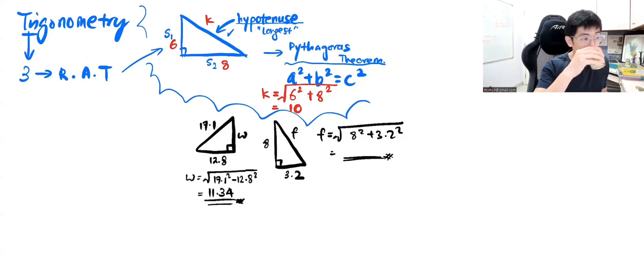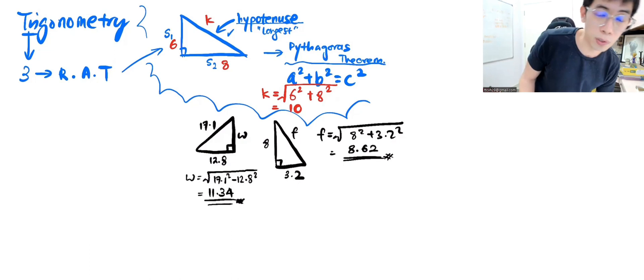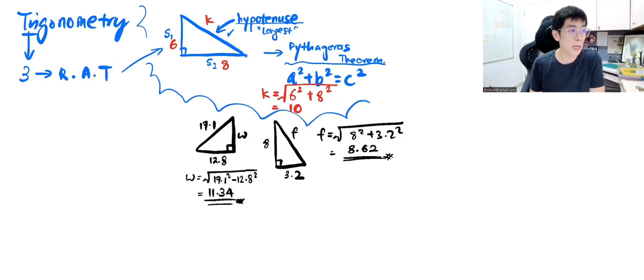√(8² + 3.2²). Close it. You will get your answer as 8.616 or maybe 8.62 if I'm going to put two decimal points. If I say there's a unit there, then you put units. No units, just ignore it.